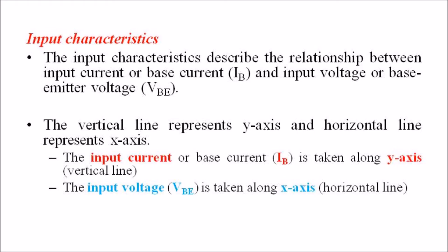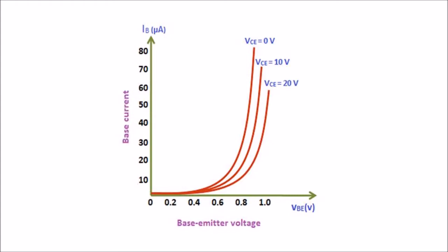To determine the input characteristic, the output voltage VCE is kept constant at 0V and the input voltage VBE is increased from 0V to different voltage levels. For each voltage level of VBE, the corresponding input current IB is recorded. A curve is then plotted between IB and VBE at constant output voltage VCE equal to 0V.